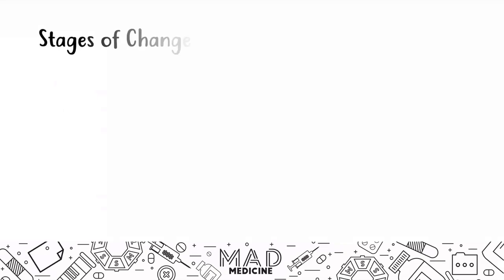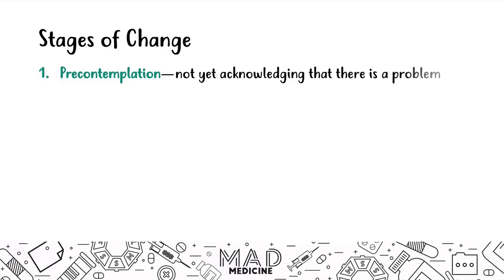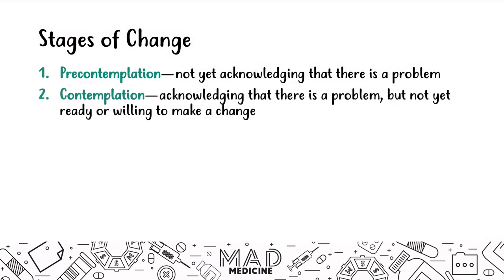One thing to know before we talk about each specific substance is the stages of change. There are six main stages you should know for Step 1 — this is very important. The first stage is pre-contemplation, where a patient does not acknowledge they even have a problem. Then there's contemplation, where they acknowledge the problem but are not ready to change. Think about it: at first you don't realize you're addicted, then you realize it but it feels good and you don't want to change.